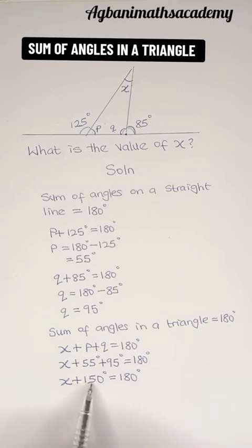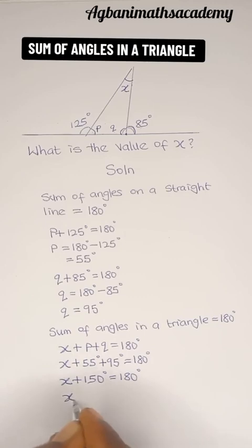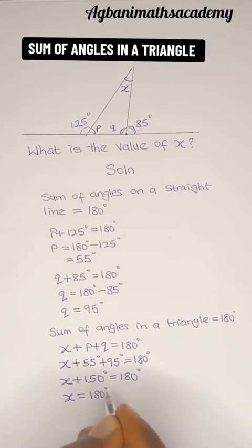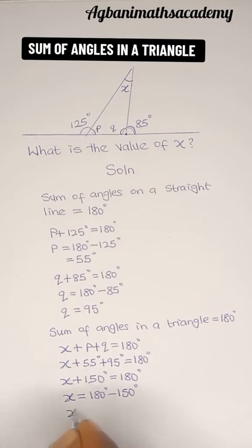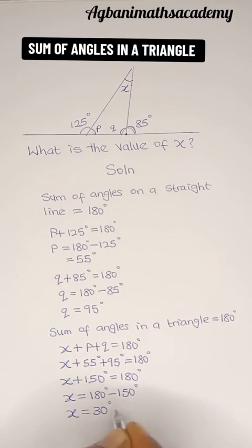We are going to move plus 150 degrees to the right and this will make it negative. So X is equal to 180 degrees minus 150 degrees. 180 degrees minus 150 degrees is going to give us 30 degrees. Therefore, our value of X is equal to 30 degrees.